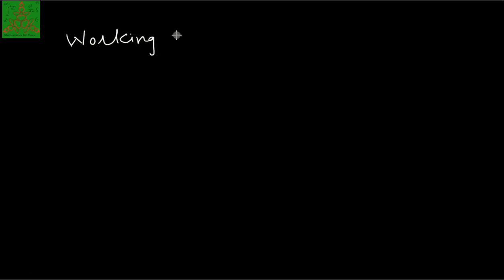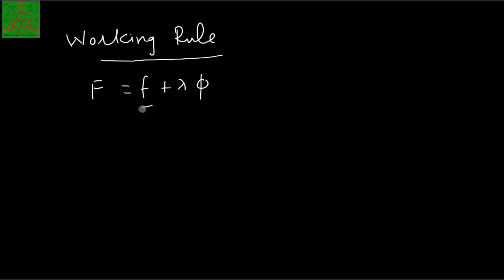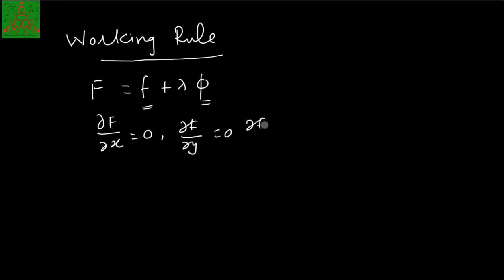The working rule for the Lagrange multiplier method: first, calculate capital F = f + lambda*phi, where f is the function for which you need the stationary value and phi is the given constraint condition. Then calculate delta F/delta x = 0, delta F/delta y = 0, and delta F/delta z = 0. All these conditions give you the stationary points, and you solve these three equations together.